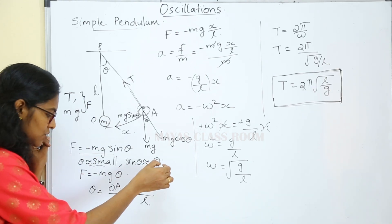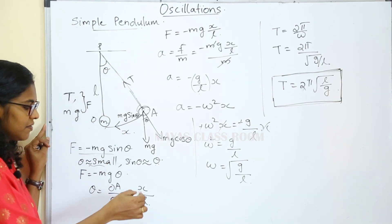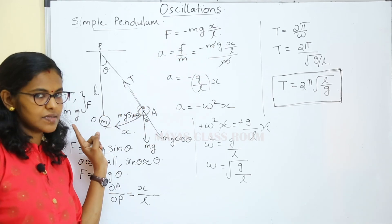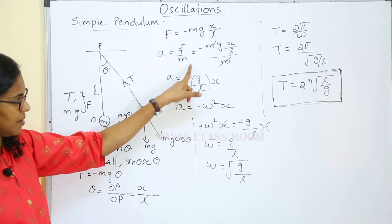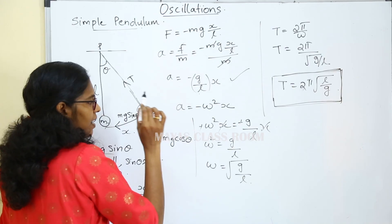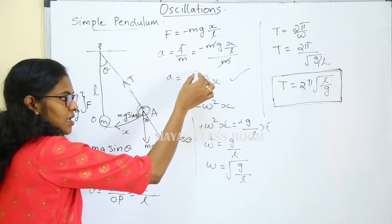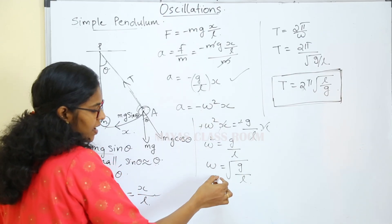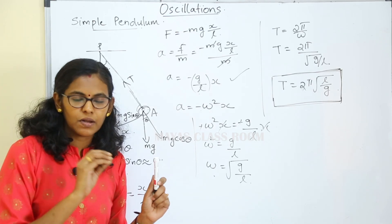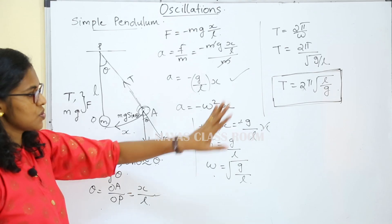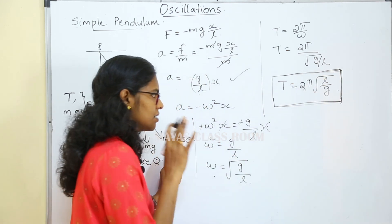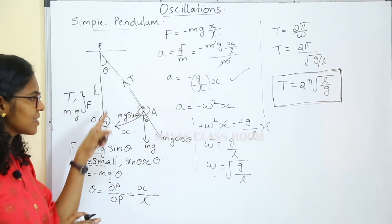Theta equals displacement divided by radius. Acceleration a equals F by m, giving a equals minus g by L into x. This matches the SHM equation minus omega squared into x. Therefore omega squared equals g by L, and the time period T equals 2pi into root of L by g. The time period depends on the length of the pendulum.